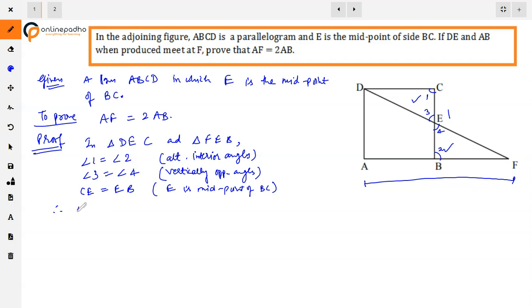Therefore, by Angle-Side-Angle criteria of congruency, triangle DCE is congruent to triangle FEB.